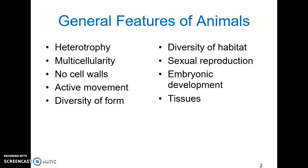Most animals show sexual reproduction. Their reproductive cycle consists of a large, immobile egg and a small, motile sperm that swims to the egg to fertilize it. Most animals show a common pattern of embryonic development, where a single fertilized egg or zygote undergoes cell division to form a ball of cells called a blastula, which then forms a gastrula that has a pore called a blastopore in it. This then differentiates into an embryo.